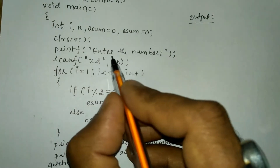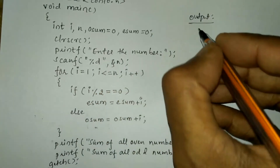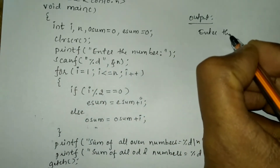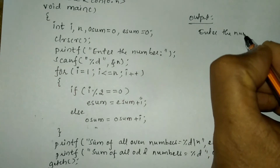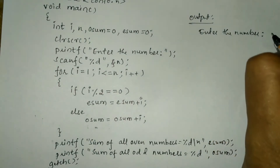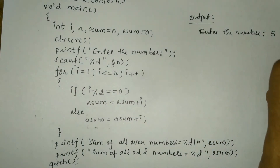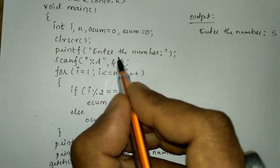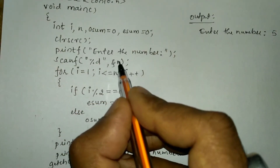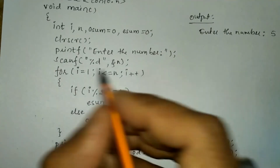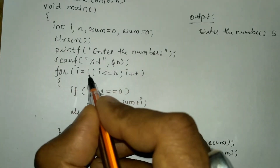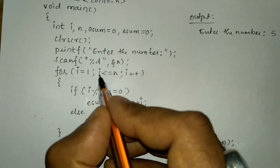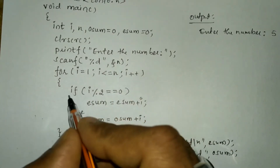Once we compile and run this program it will ask the user to enter the number — I am going to enter 5. So n = 5. For the loop: i = 1, and 1 is less than or equal to 5, so the condition is true.